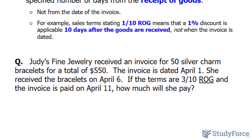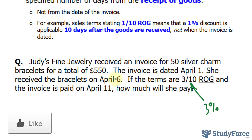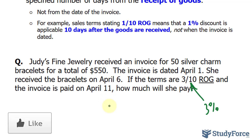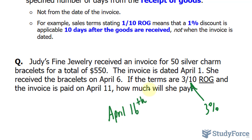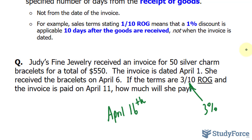So let's interpret this. We're told that she receives a 3% discount if she pays within 10 days of receiving the item. So if she receives the item on April 6th, that means she has up until April 16th to obtain the 3% discount. Because the 11th is five days before the 16th, she will get a 3% discount on $550.